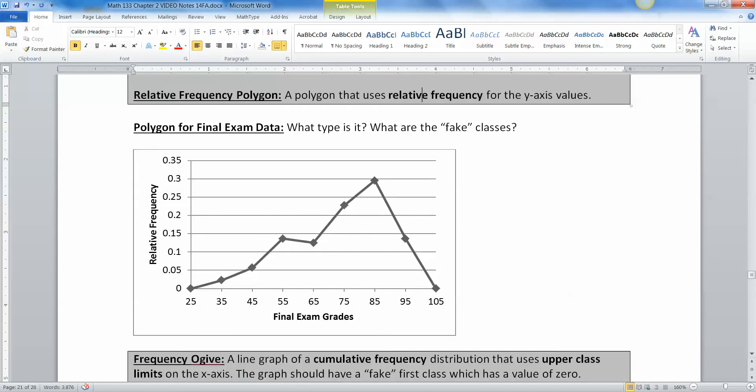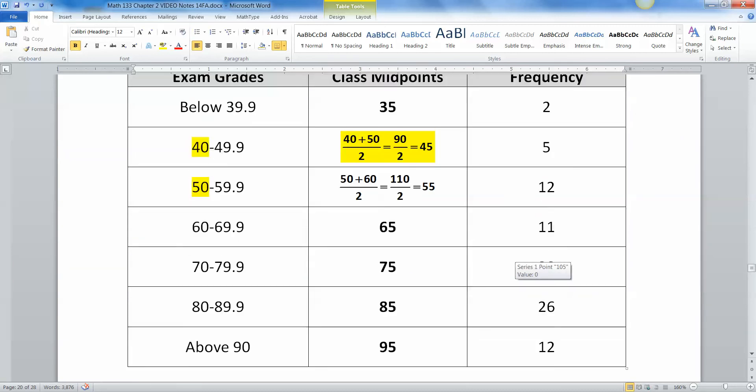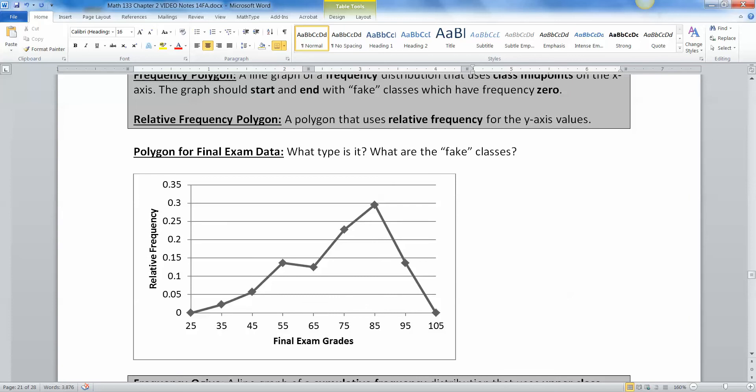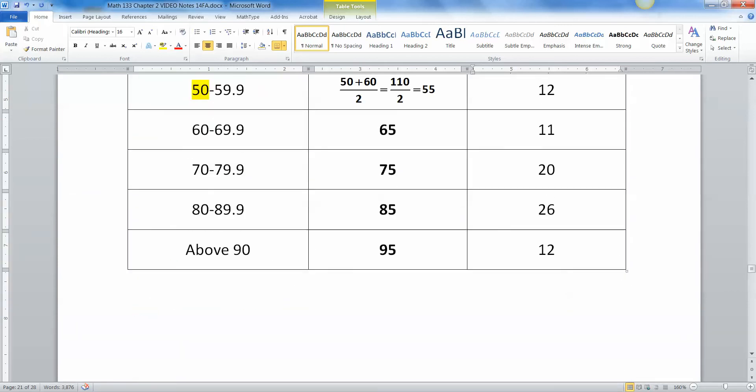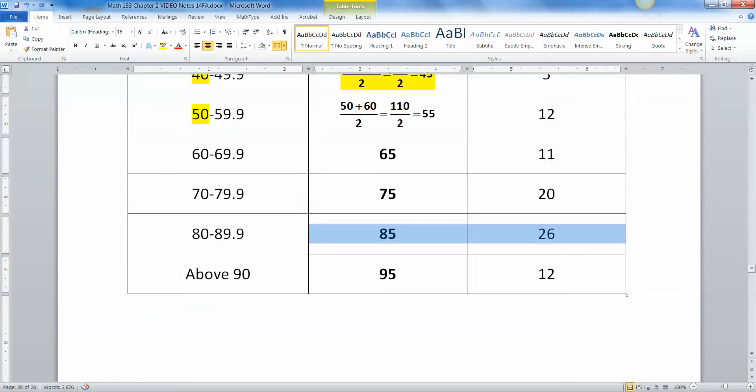So let's look here. This is the final exam grades that you were just looking at right here. So 35 was the midpoint for the first class, and there were two there. 45 for the next class, and there were five there. If you look here, you can see there's 35. And look at that. That's not frequency. That's relative frequency, right? So this is a relative frequency graph. There's 35. There's 45. There's 55. And so on. 85 had the highest relative frequency, probably because it had the highest frequency. Right here. Yep, it did.